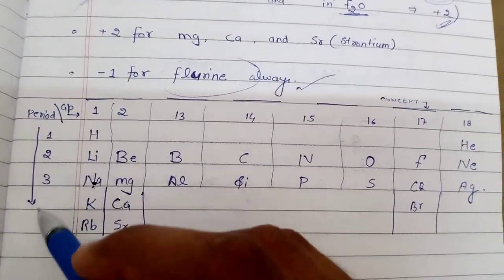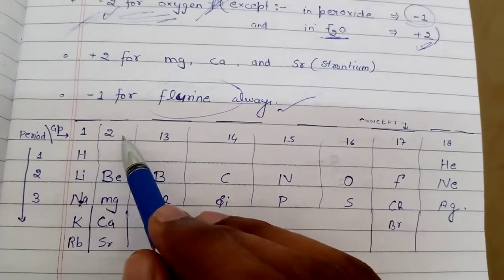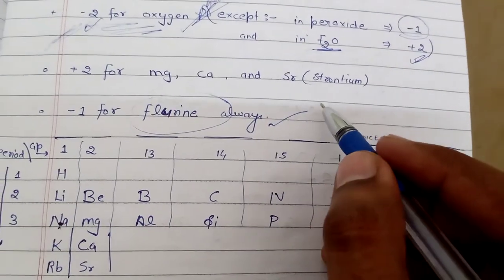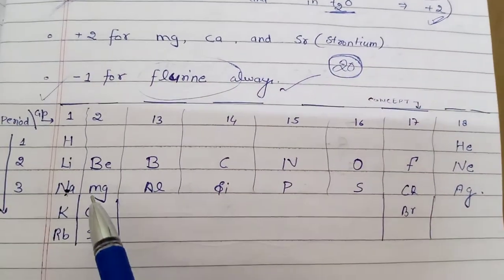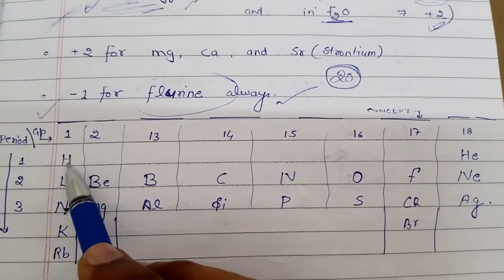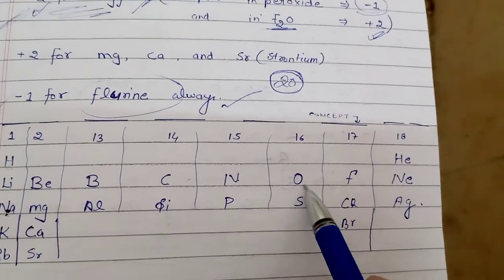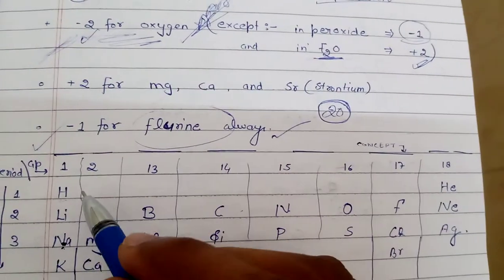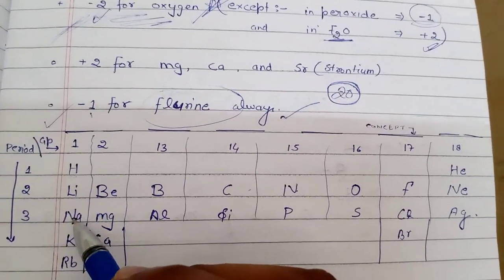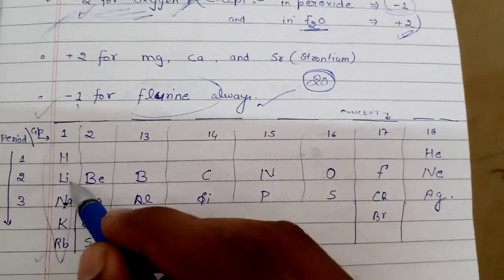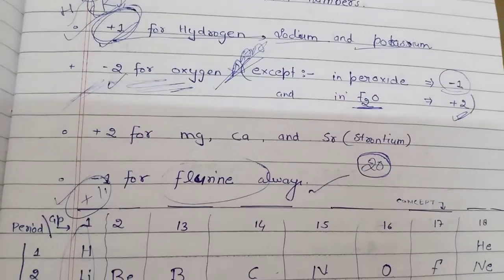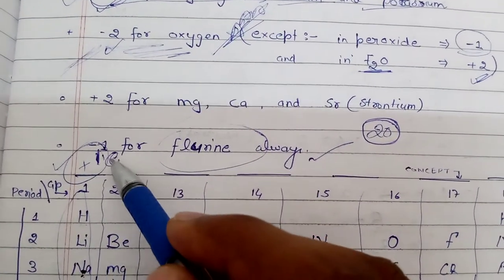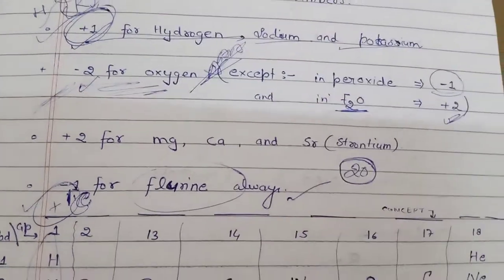Let me explain using the Periodic Table. Period goes downward, and groups go sideways: Group 1, 2, 13, 14, 15, 16, 17, 18. For exam preparation, remember element names up to atomic number 20, arranged by atomic number: hydrogen, helium, lithium, beryllium, boron, carbon, nitrogen, oxygen, fluorine, neon. Hydrogen is in Group 1, lithium is in Group 1, sodium and potassium are also in Group 1 - so their oxidation number is plus 1. This means they each have one extra electron which they can donate.